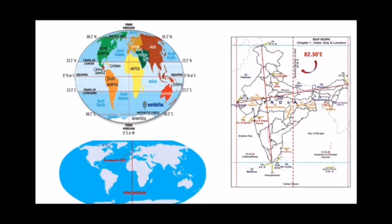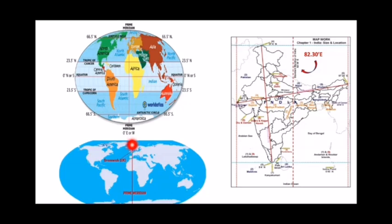The time difference between these two longitudes is five hours and thirty minutes. The places towards the western side of the prime meridian are behind in time compared to the eastern side. India is to the east, so the time difference between IST and GMT is five hours and thirty minutes. That means GMT, Greenwich Mean Time, is five hours thirty minutes behind India, that is Indian Standard Time.